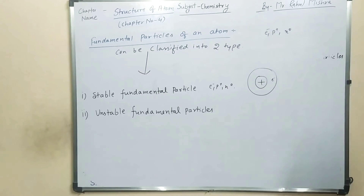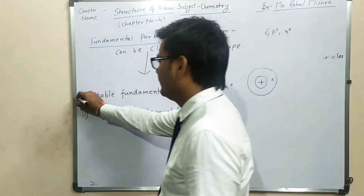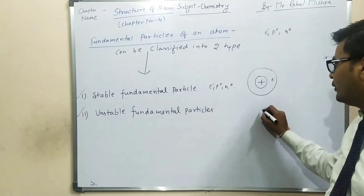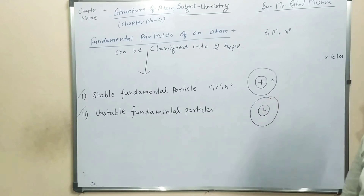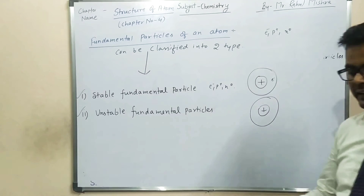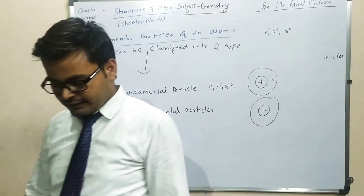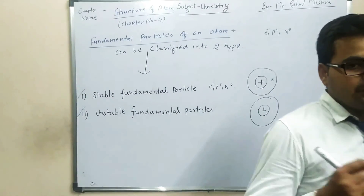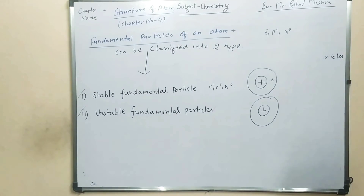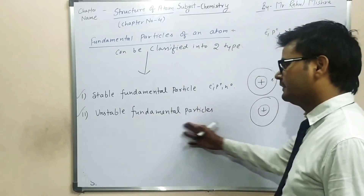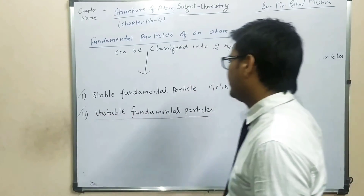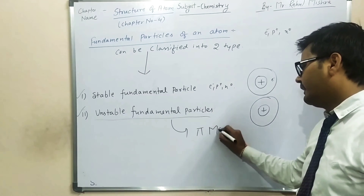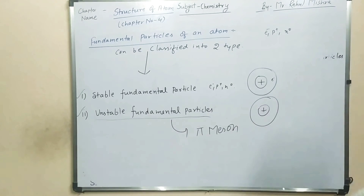But those fundamental particles which exist outside of the nucleus for only an instant — ऐसे fundamental particles जो किसी क्षण के लिए nucleus के बाहर exist करते हैं — then those fundamental particles are called as unstable fundamental particles. Generally they are called as π meson. ऐसे particle को generally हम लोग π meson कहते हैं.